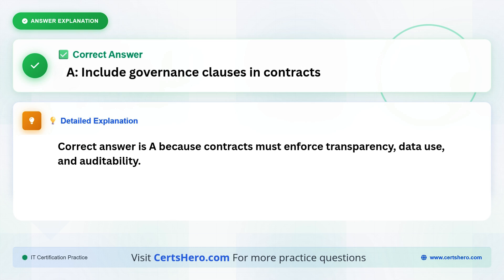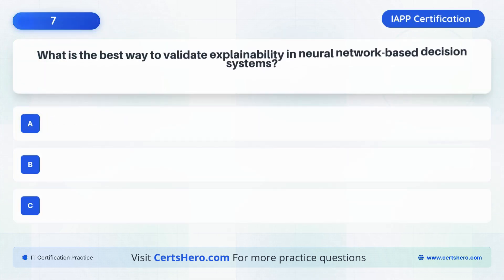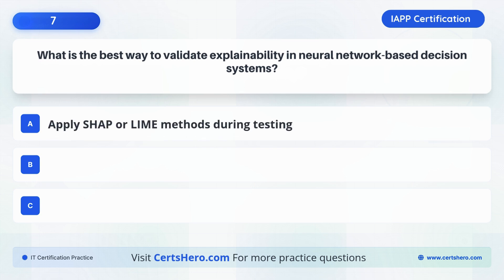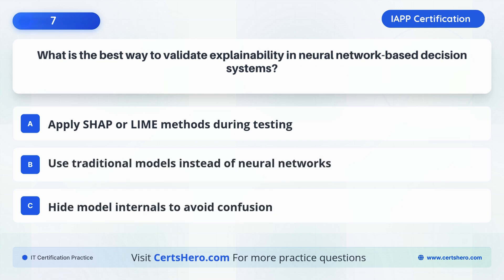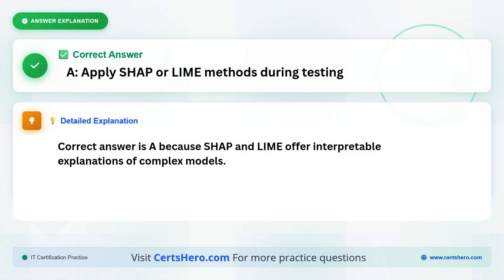What is the best way to validate explainability in neural network-based decision systems? A. Apply SHAP or LIME methods during testing. B. Use traditional models instead of neural networks. C. Hide model internals to avoid confusion. The correct answer is A: Apply SHAP or LIME methods during testing, because SHAP and LIME offer interpretable explanations of complex models.